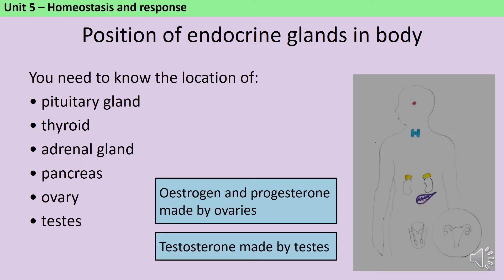Puberty, menstruation and contraception are covered in a separate video, but to cut a long story short, the ovaries produce two key sex hormones — oestrogen and progesterone — while the testes produce testosterone.